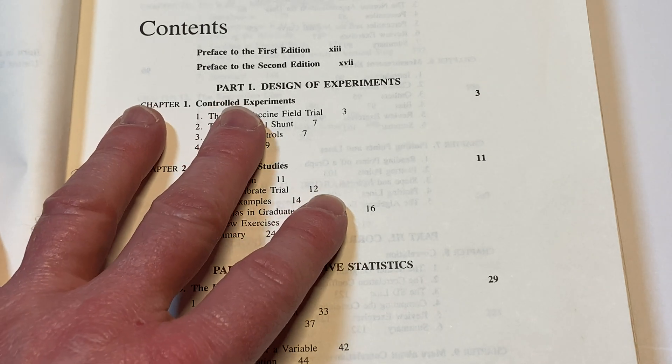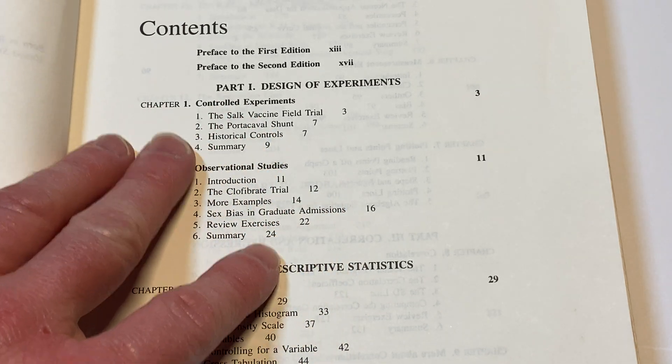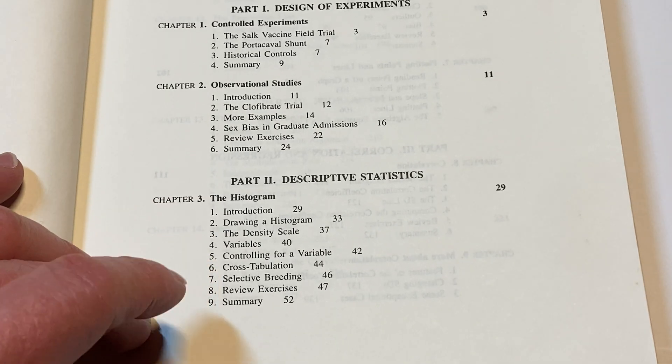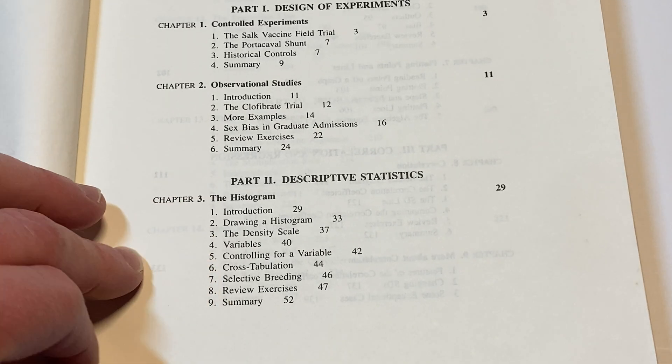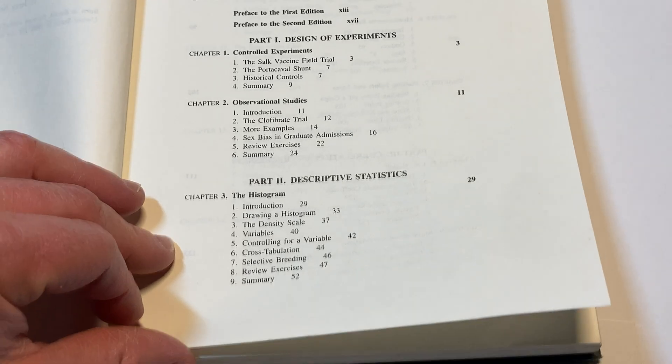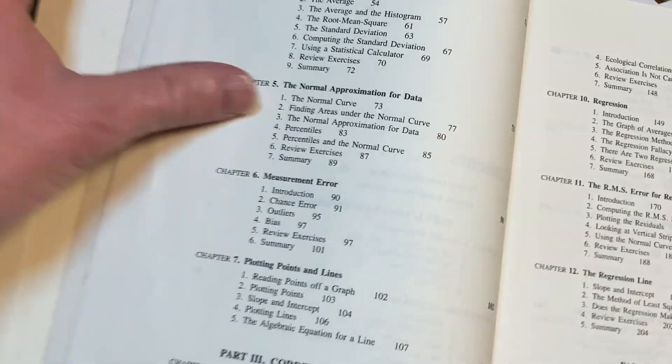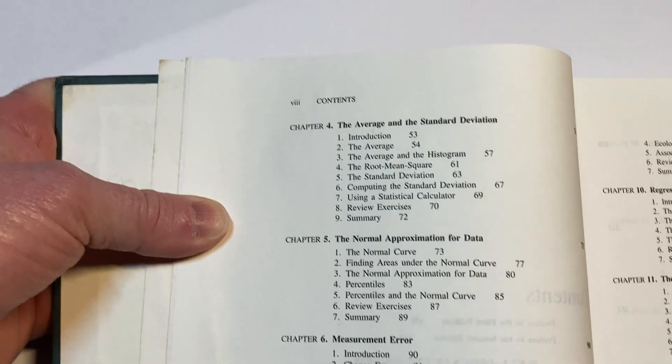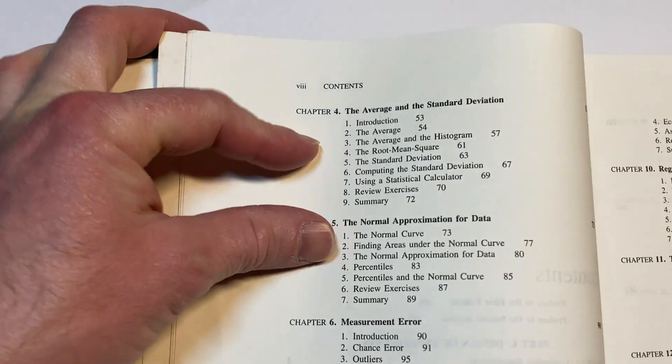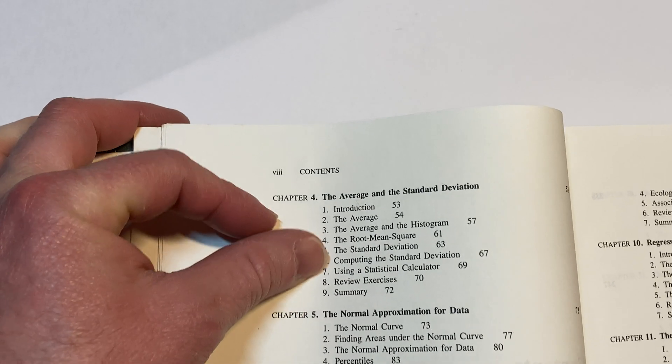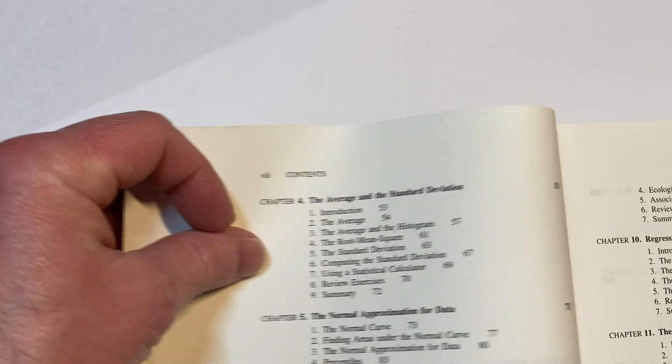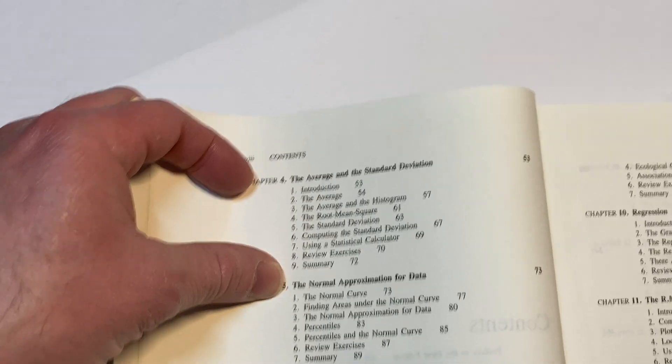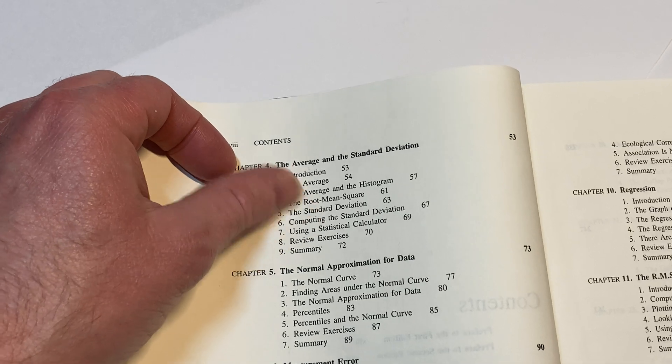Let's look at the topics that you can actually learn. I think this is an incredible book. Part one, design of experiments. This is really important to give you some examples. Part two, descriptive statistics. That's very important. The average and the standard deviation, so an entire chapter on that. There's the average and the histogram, the root mean square, and also standard deviation. It's pretty thorough.